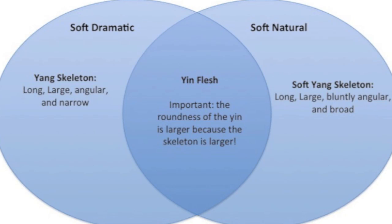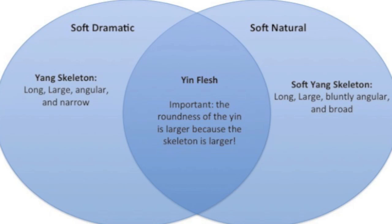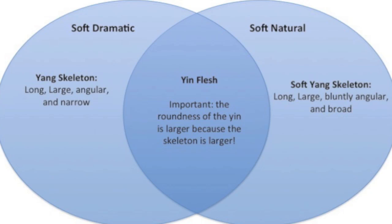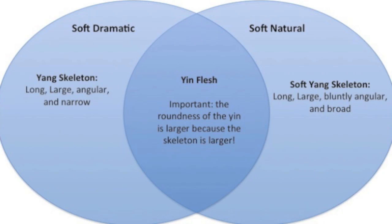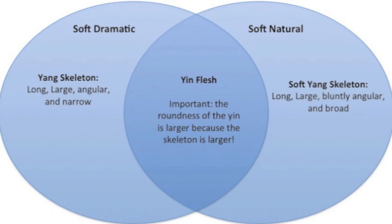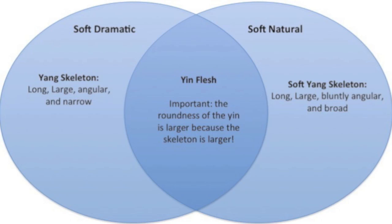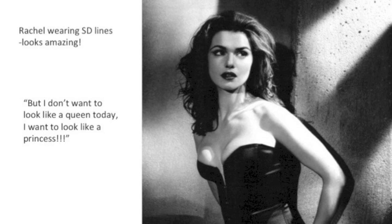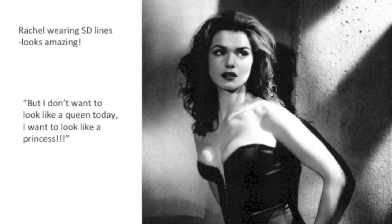The natural aspect in general is going to make the bones of the dramatic look dainty and small. At the same time, soft natural has the yin flesh — what they have in common is the large yin curves. Soft natural and soft dramatic both share those large yin curves. So when a soft dramatic wears soft natural lines, we make the bones look more delicate and also accentuate the yin curves. It won't look too separate because the yin curves tie the soft natural look into the soft dramatic.